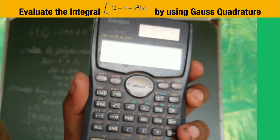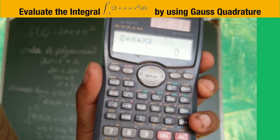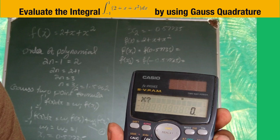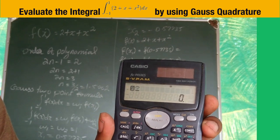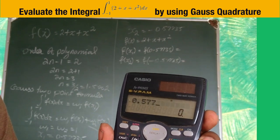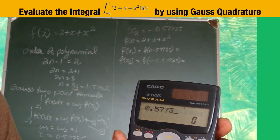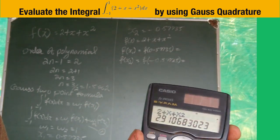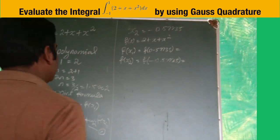We substitute the value x = 0.57735. Press CALC button, type x = 0.57735, then press equal to. You will get 2.9106.